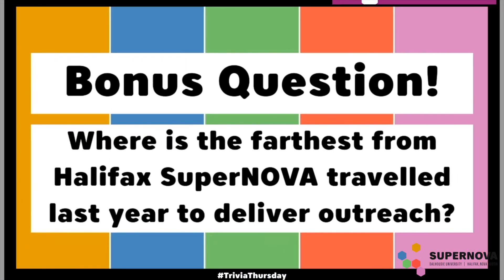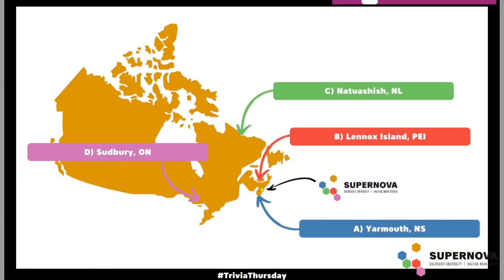This week I've got another bonus question: where is the farthest from Halifax that Supernova traveled last year to deliver outreach? Was it Yarmouth, Nova Scotia; Lenox Island, PEI; Natuwashish, Newfoundland and Labrador; or Sudbury, Ontario? For the answer to that bonus question, check out the bottom of the video description. My name's Luke, thank you for watching this episode of Trivia Thursday.